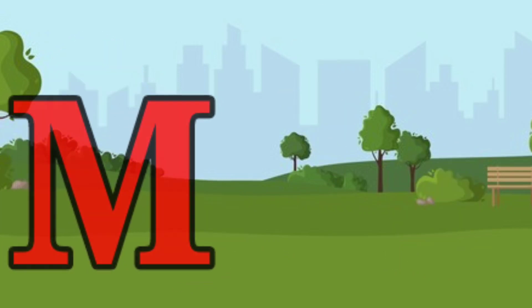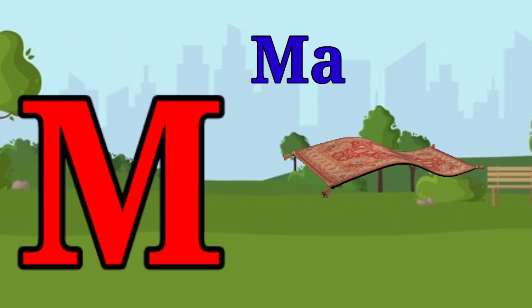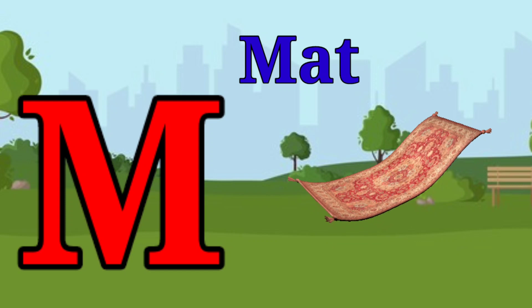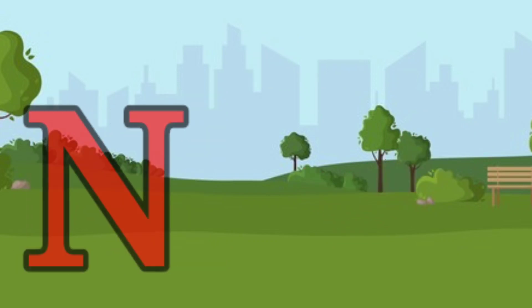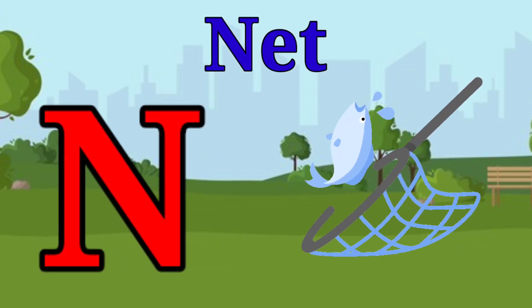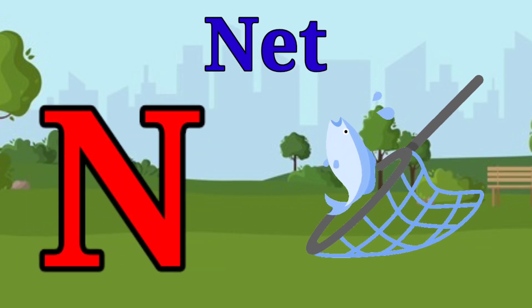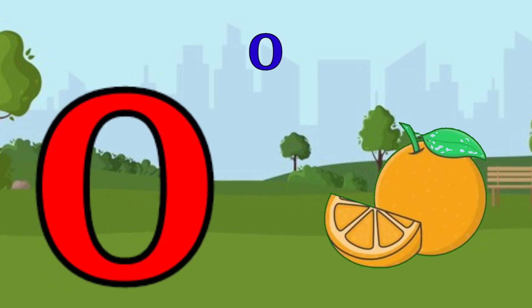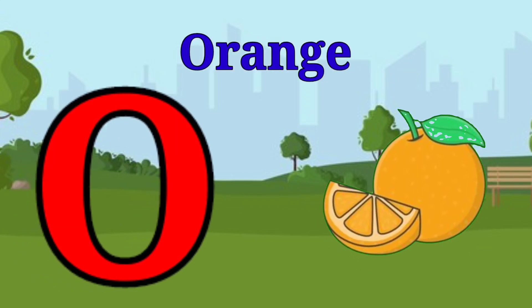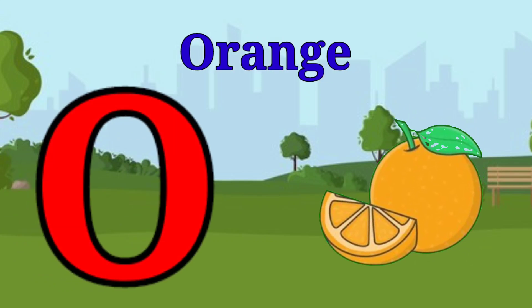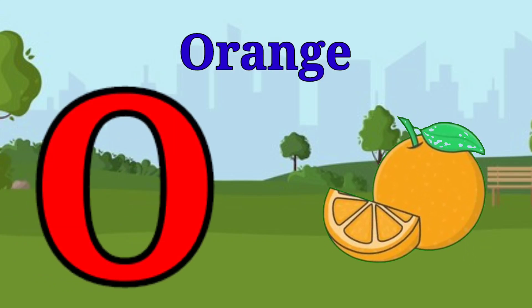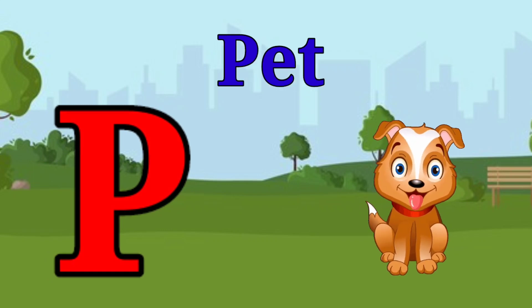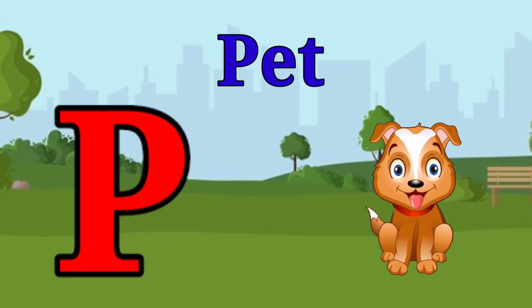M is for mat, m-m-mat. N is for net, n-n-net. O is for orange, o-o-orange. P is for pet, p-p-pet.